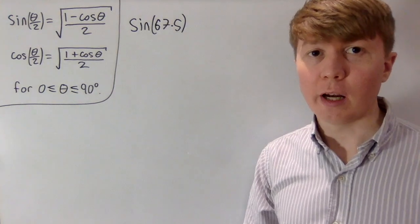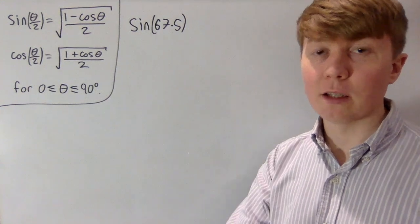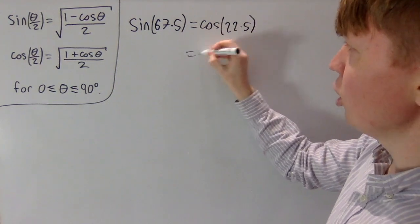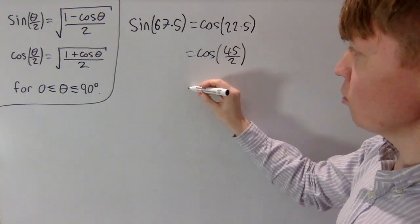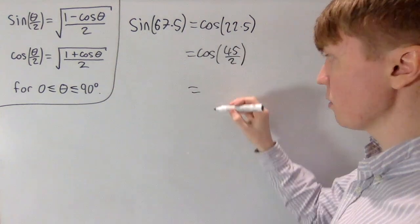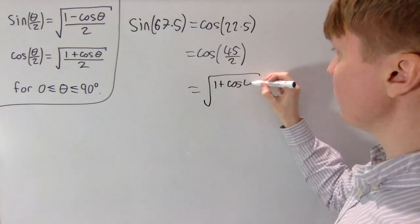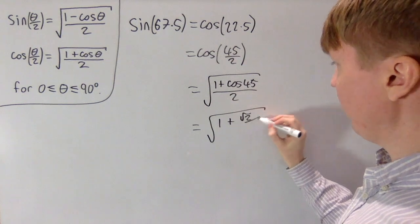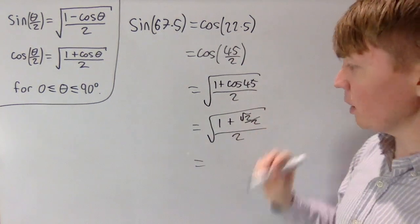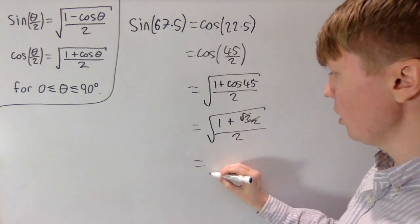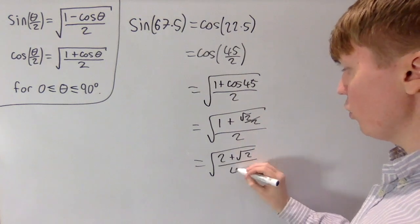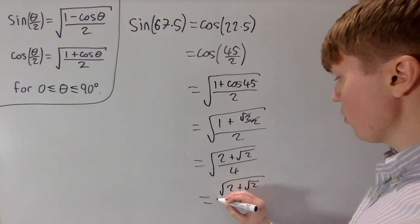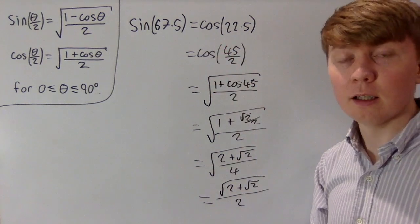For sin 67.5, we use the fact that sin θ equals cos(90 minus θ), so sin 67.5 equals cos 22.5, which is cos(45 divided by 2). Using the cosine half-angle formula with θ = 45, we write this as the square root of (1 plus cos 45) all divided by 2. With cos 45 equal to root 2 over 2, and dividing all by 2, then multiplying the top and bottom by 2, we get the square root of (2 plus root 2) all over 4. Taking the square root of 4 out gives root (2 plus root 2) all over 2 as our expression for sin 67.5.